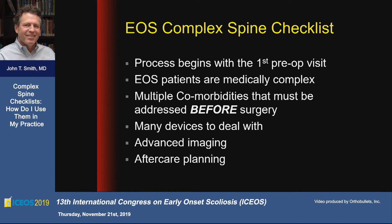Working with Nick Fletcher and John Heflin, I developed a checklist for early-onset scoliosis that actually starts at the time of your first clinic visit, when you're planning surgery. These patients are medically complex with lots of comorbidities, and there are many things to think about in a systematic way before surgery — many devices to deal with, and they all need advanced imaging. You have to make sure that when you schedule someone for surgery three months in advance, you've actually ordered an MRI and actually looked at it. You don't want to put someone to sleep and discover they have a Chiari and have to wake them up again.